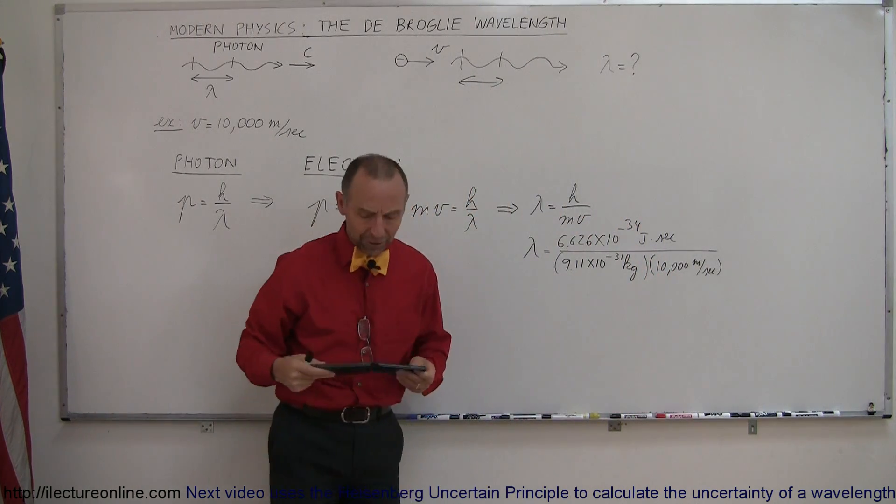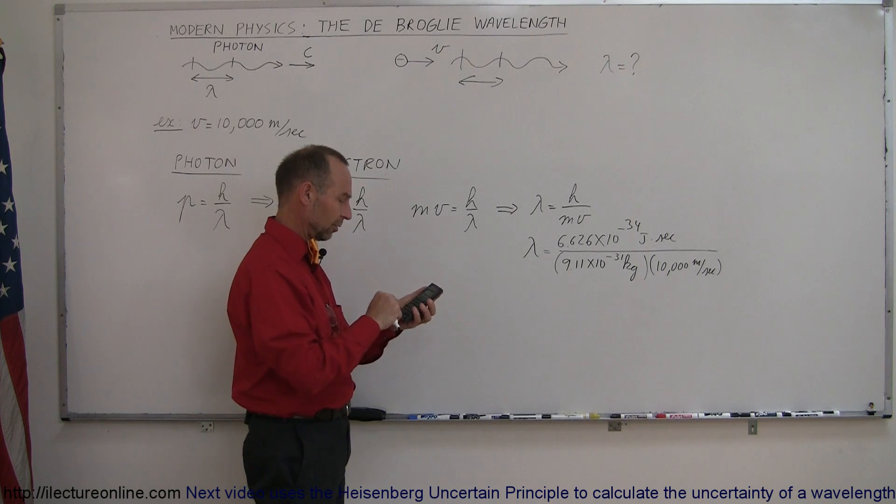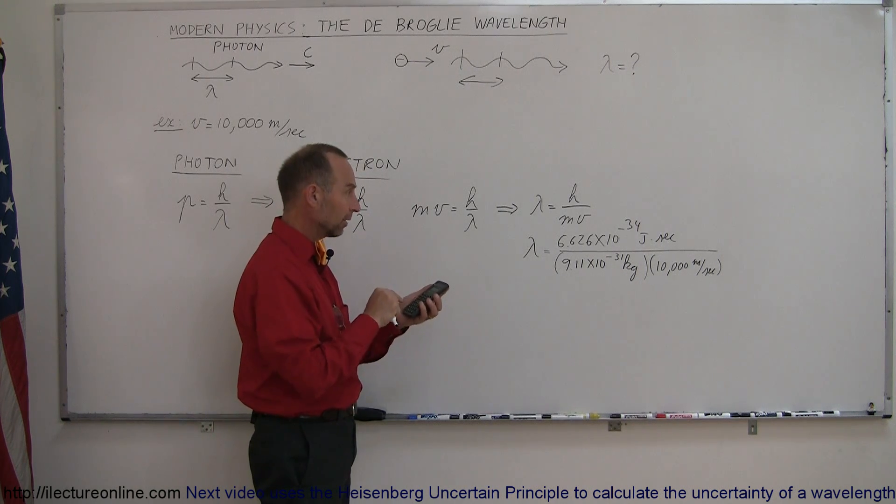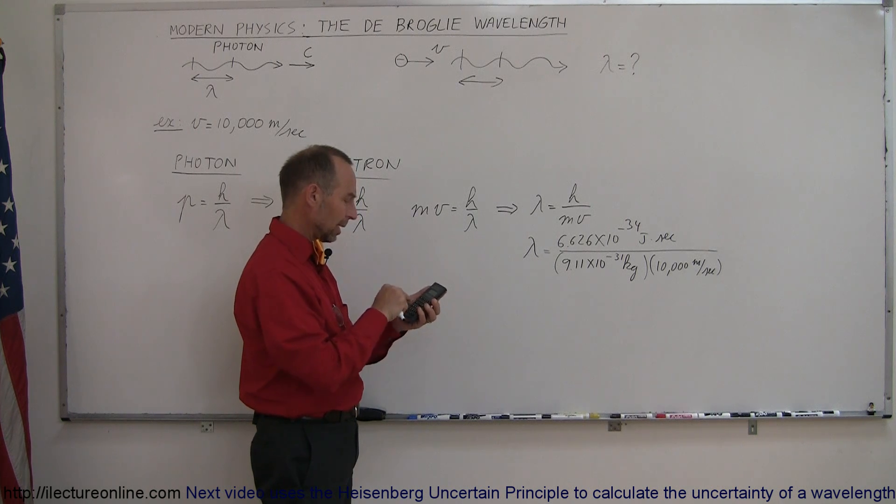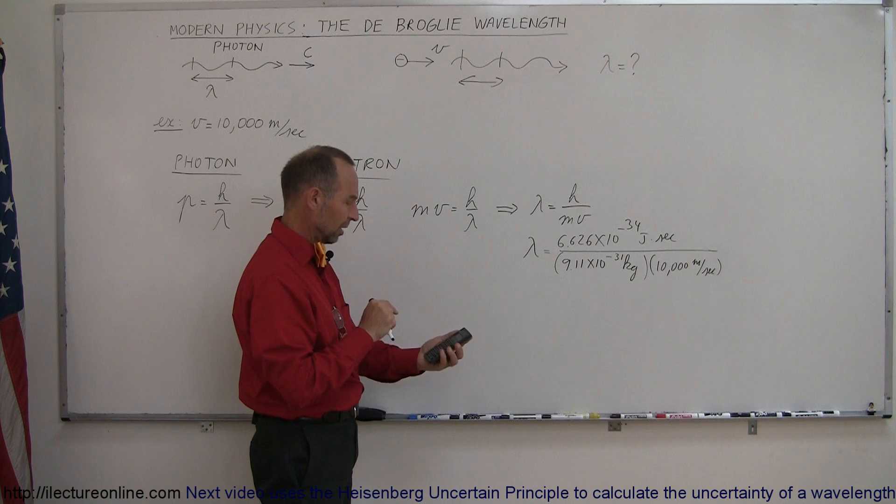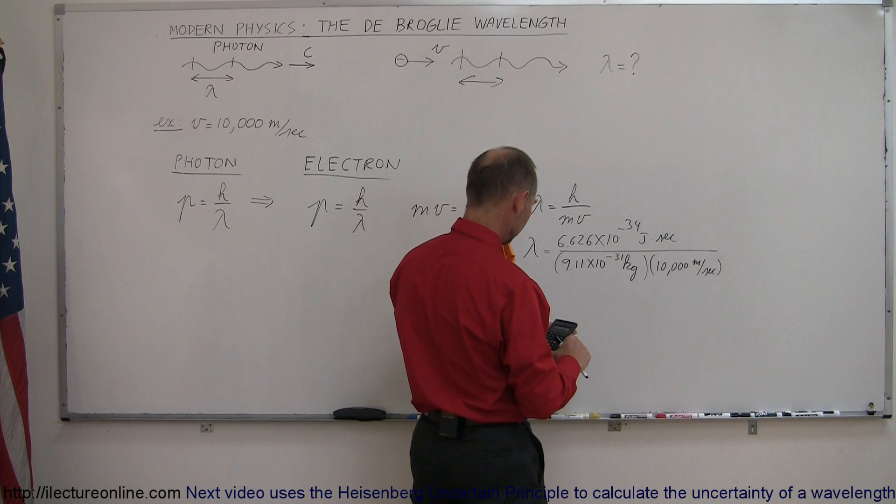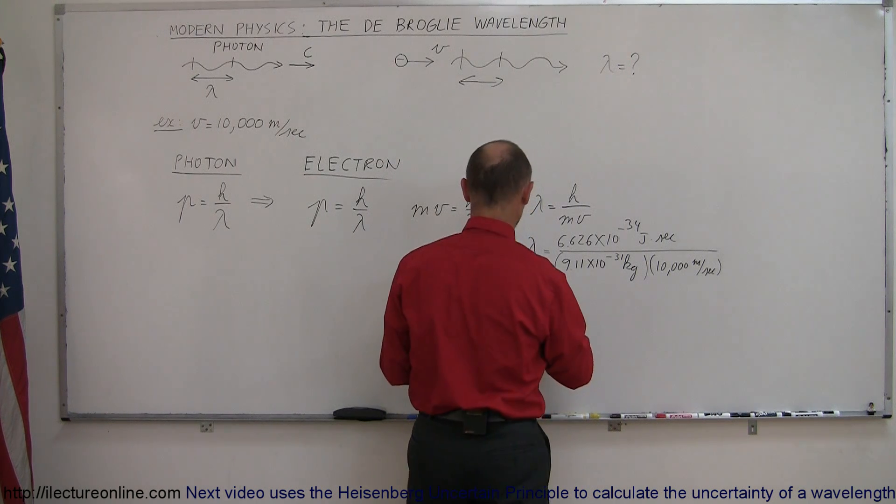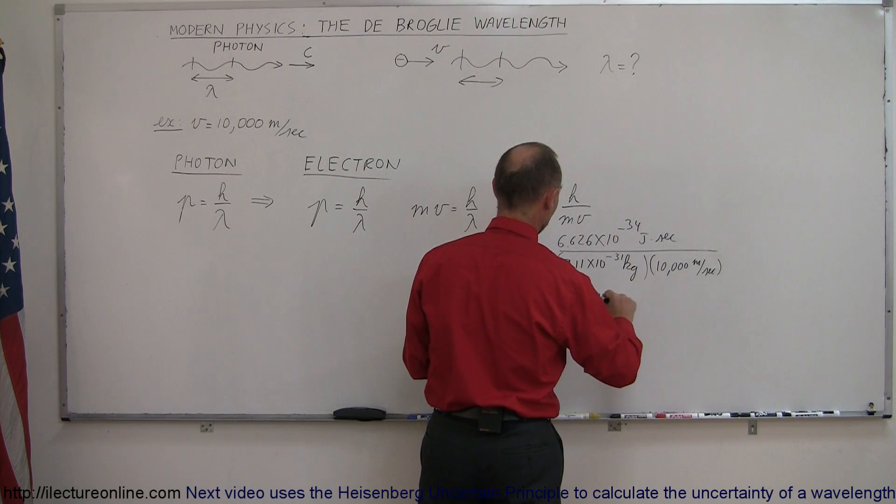And then with a calculator, let's see what kind of wavelength we come up with. So 6.626 e to the minus 34, divided by 9.11 e to the minus 31, and divided by 10,000. Equals 72.7 nanometers. So lambda equals 72.7 nanometers.